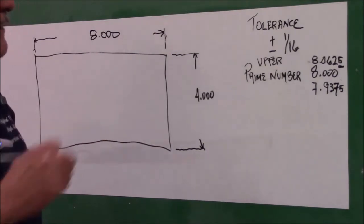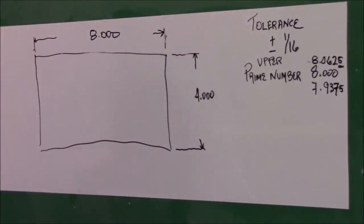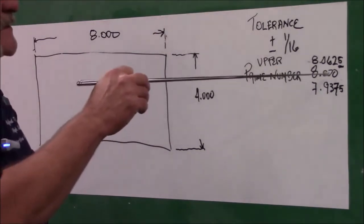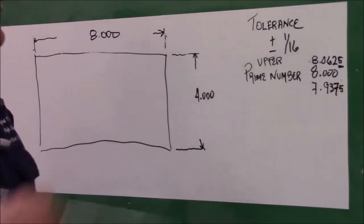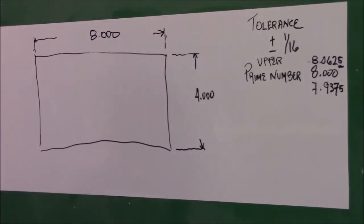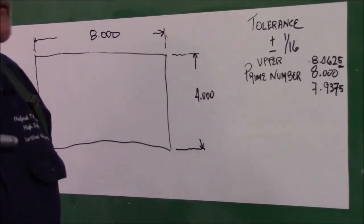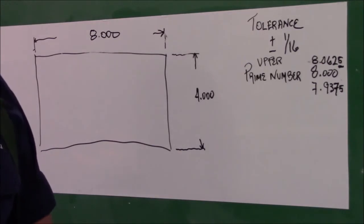The one down here is your lower level, lower level, right, is sixty-two thousandths, sixty-two and five ten-thousandths, subtracted off of your eight inches. So that lower level, you could go to seven inches, nine hundred thirty-seven thousand and five ten-thousandths.